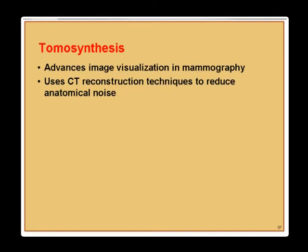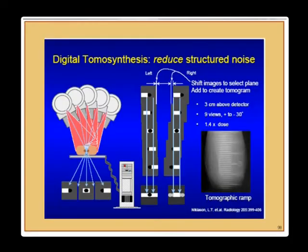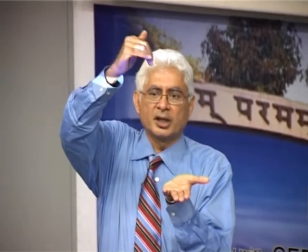Tomosynthesis is a recent advance from Mass General Hospital for image visualization in mammography. It uses CT reconstruction techniques to reduce anatomical noise. When X-rays pass through a compressed breast, overlapping anatomical layers obscure small microcalcifications or speculated lesions — called anatomical noise. This was one reason why early digital systems showed little improvement over screen-film systems despite being more efficient.